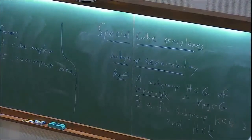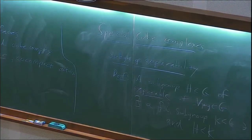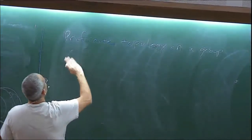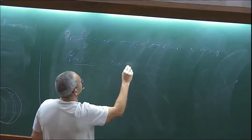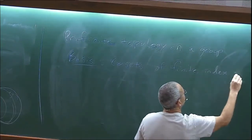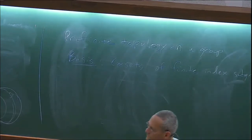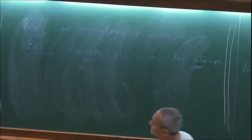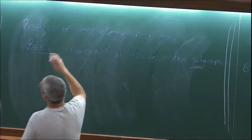Scott proved that the ability to lift a surface to an embedding in a finite cover is equivalent to this separability condition. That's always nice: you turn a geometric question into an algebraic one. There's also the profinite topology on a group, whose basis is the collection of cosets of finite index subgroups. Saying a group is residually finite is like saying it's Hausdorff in the profinite topology. Separable is the same as closed in the profinite topology.